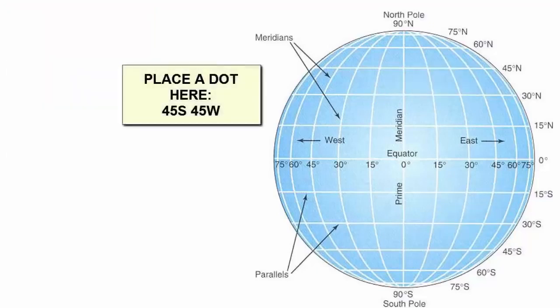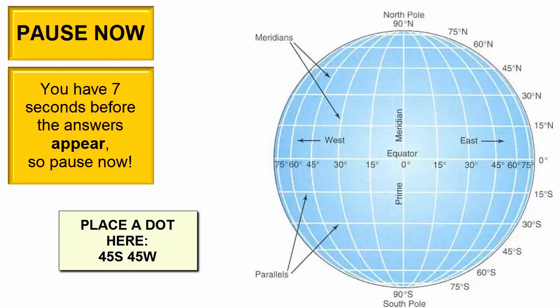Now, try to accurately locate or place a dot on the spot that is located 45 degrees south of the equator and 45 degrees west of the prime meridian.